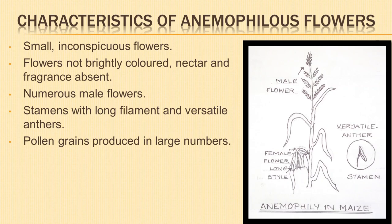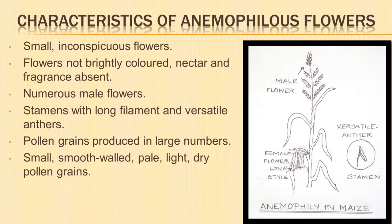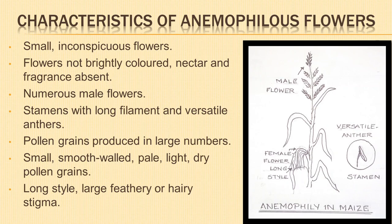A large quantity of pollen grains is wasted during transit from one flower to another; therefore, pollen grains are produced in large numbers to compensate for wastage. Pollen grains are small, smooth-walled, pale in color, light in weight, dry, and sometimes provided with wings, as in Pinus. These characteristics help the pollen grain to get dispersed to long distances. In order to trap the pollen grains, the style is long, bearing large feathery or hairy stigma, e.g. bamboo, sugarcane.